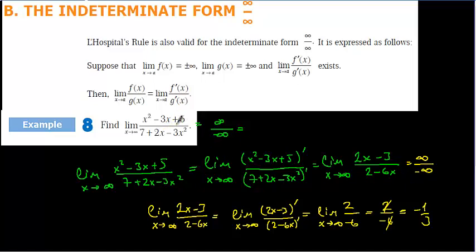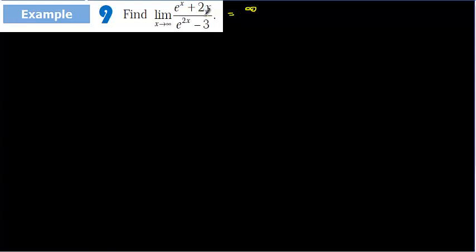Generally, we are not going to apply L'Hôpital's rule for polynomial functions. If the functions are not polynomial and you have an infinity over infinity form, we use L'Hôpital's rule. For the second question, we use it precisely because you cannot factorize and there are no polynomial functions, so you cannot compare powers. But it is going to be infinity over infinity: e to the infinity is infinity, and so the expression gives infinity over infinity. We will apply L'Hôpital's rule directly.